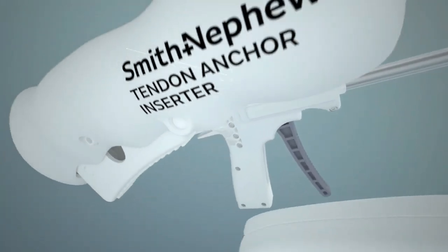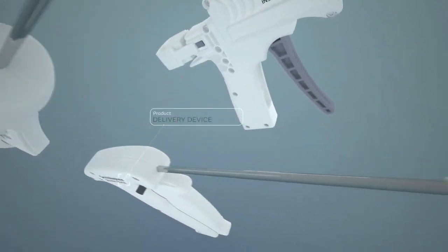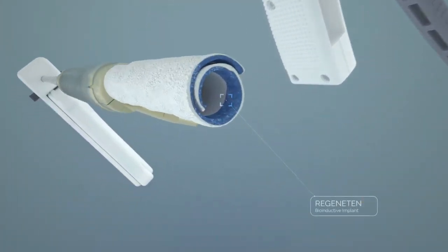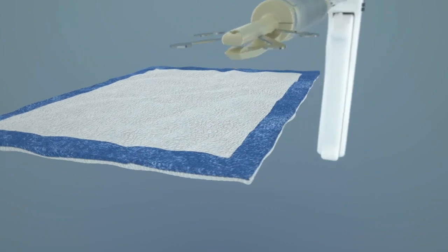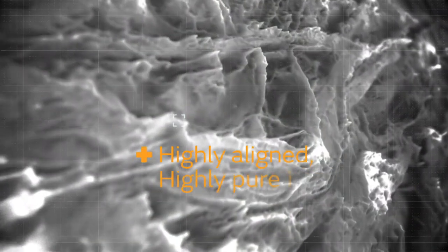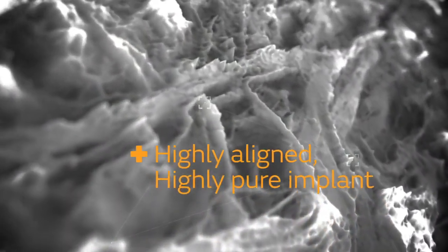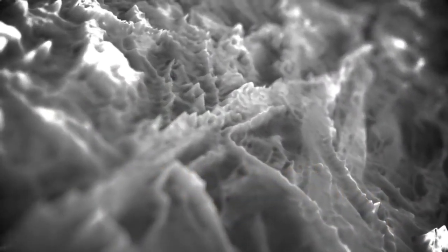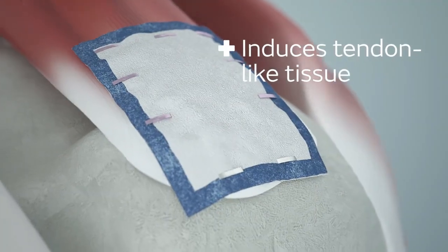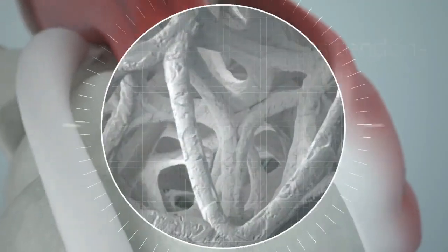we use special techniques to insert the bovine bioinductive patch through a special inserter. The patch comes in two sizes and is a pure implant made of collagen. It induces tendon-like tissue.